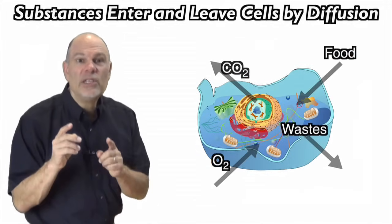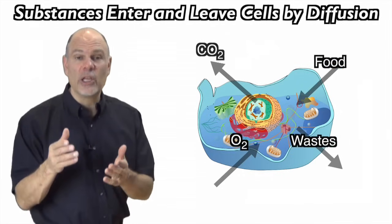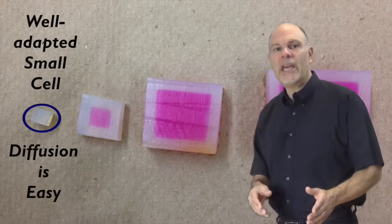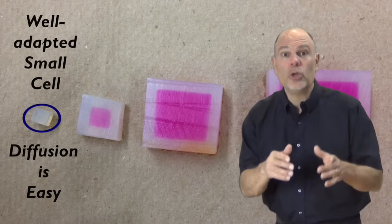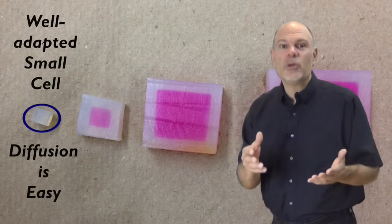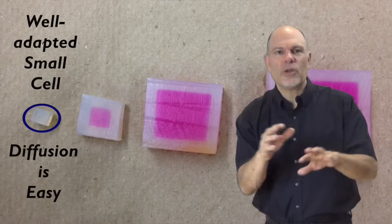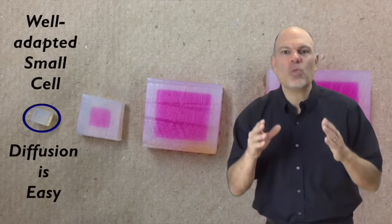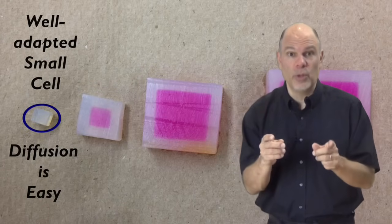If cells were too big, then diffusion wouldn't work in terms of reaching the entire volume of the cell. Just pretend that the smallest agar cube was a cell, and that the vinegar molecules were oxygen. This cell is doing fine. Oxygen is getting all the way deep into the cell. Things are diffusing in and out. This cell is well adapted to exchange substances with its environment through diffusion.